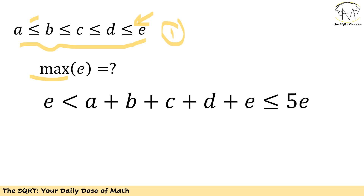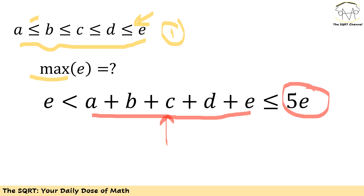In the original problem we had a+b+c+d+e. Now I'm going to use one inequality: all these values are less than or equal to e, so if you add them together it's going to be less than or equal to 5e. On the other hand, since we already have one e in the expression, the sum is going to be greater than e, because these are positive integers.